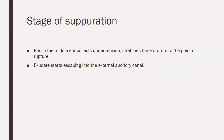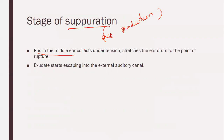Stage of suppuration — pus forms in the middle ear cavity. Pus collects under tension and stretches the eardrum to the point of rupture. When pus formation is complete in the middle ear, the tympanic membrane or eardrum is under great pressure, leading to rupture at this stage. The pus then starts escaping into the external auditory canal. The escape is through perforation of the tympanic membrane.